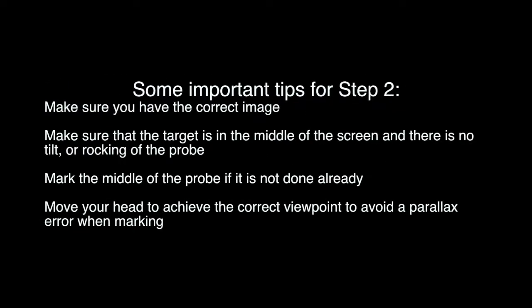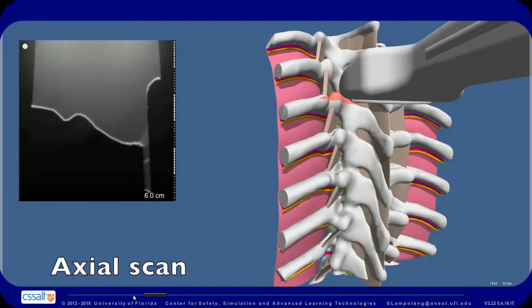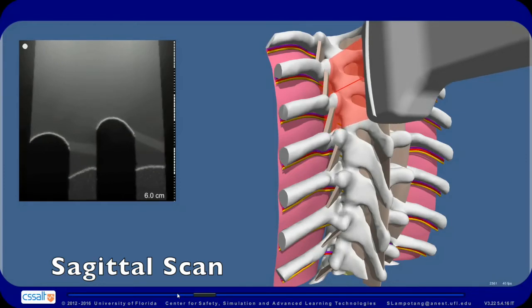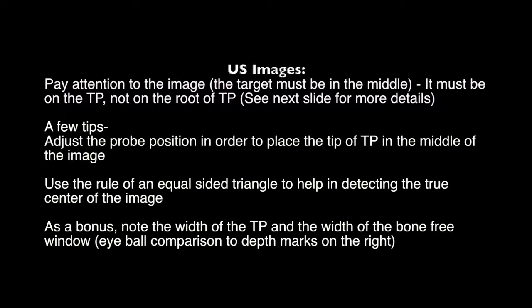Some important tips for step 2: Make sure you have the correct image. Make sure that the target is in the middle of the screen and there is no tilt or rocking of the probe. Mark the middle of the probe if it is not done already. Move your head to achieve the correct viewpoint to avoid a parallax error when marking. When looking at ultrasound images, pay attention — the image must be on the TP and not on the root of the TP.